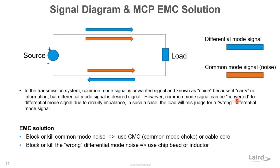This is a basic model for common mode and differential mode. The differential mode is shown in blue and the common mode in orange. In a transmitting system, differential mode is the useful signal, while common mode is an undesired signal because it carries no useful information. We use a common mode choke and cable core to suppress common mode noise, and we use a chip bead or inductor to suppress differential mode noise.